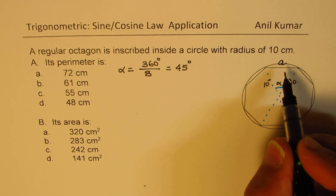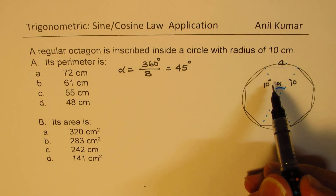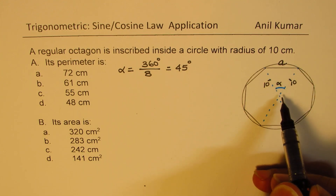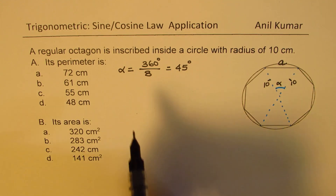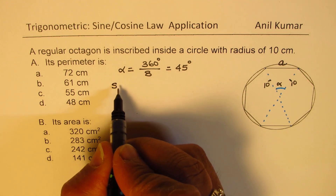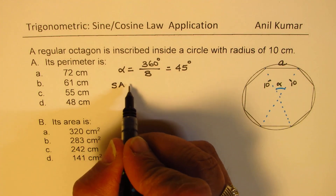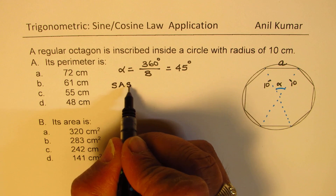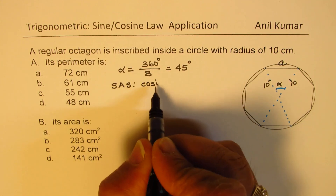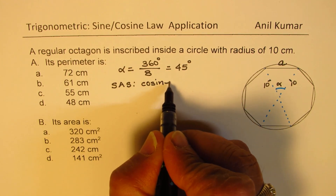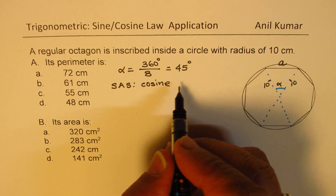Let the side length be A. We know two sides of the triangle with the included angle, so we can use the cosine law to find the length of each side of the octagon.